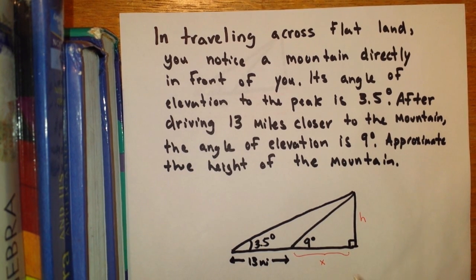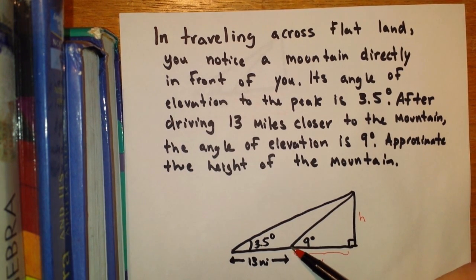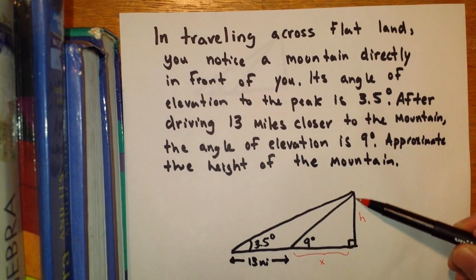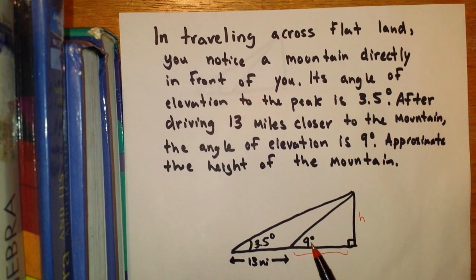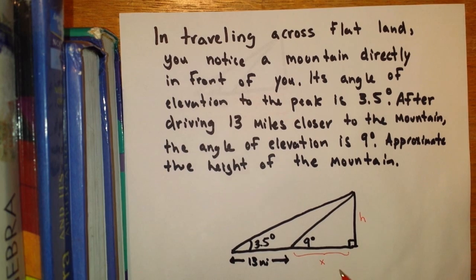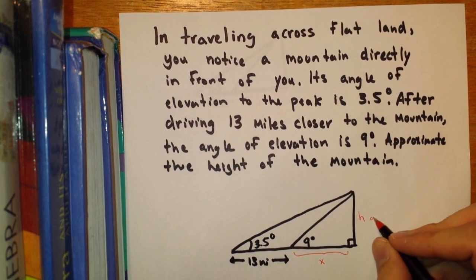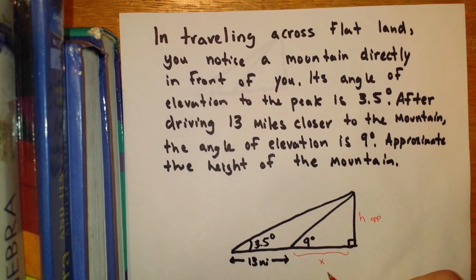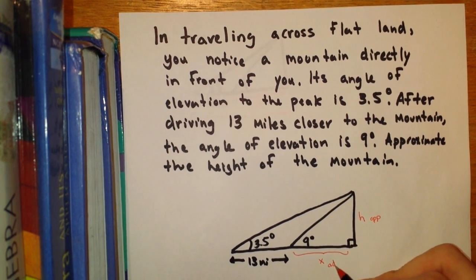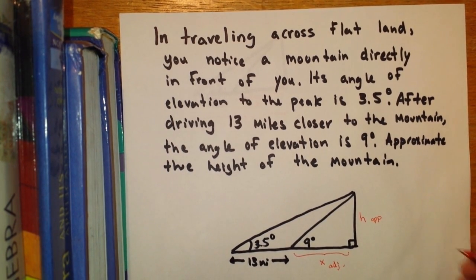Notice in this problem that we have two right triangles. One right triangle is the small one here, composed of the 9 degrees, the H, and the X. So if we're thinking of our trig functions, H is the opposite leg, X is the adjacent leg. The trig function that we're going to use is tangent. Tangent relates the opposite and the adjacent.